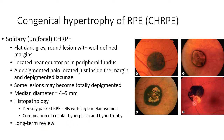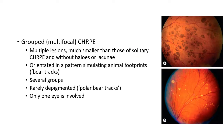This picture shows a peripapillary solitary congenital hypertrophy of retinal pigment epithelium. In grouped or multifocal CHRPE, there will be multiple lesions much smaller than those of solitary CHRPE and without halos or lacunae. They will be oriented in a pattern simulating animal footprints, and are also called bad tracts. There can be several groups and they can be rarely depigmented, in which case they are called polar bad tracts.